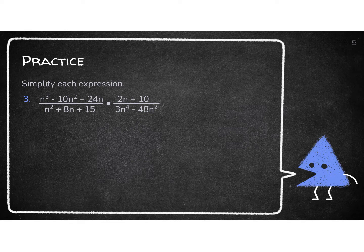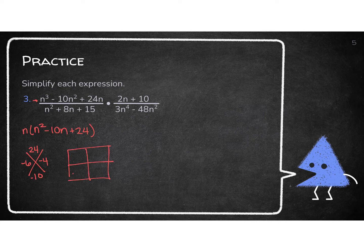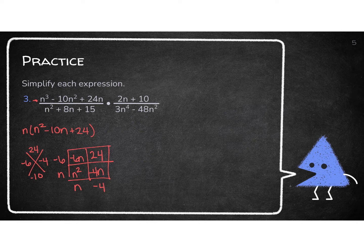Number 3 — this is where it gets fun. We have to think of this as four separate problems that we'll put back together to simplify and find excluded values. Looking at the top of the first fraction, I have N³ minus 10N² plus 24N. First things first, I need to find a GCF. They all have an N in common, so I take that out, leaving N² minus 10N plus 24. Since I have N squared, I know I have to factor this using the X-box. I have 24 on top and negative 10 on the bottom, so negative 6 and negative 4. Placing the four terms — N², negative 6N, negative 4N, and 24 — into the box gives me N minus 6 and N minus 4. If you're not seeing that, stop the video and connect with me. So this gives me N times (N minus 6)(N minus 4).